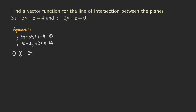So we're going to get 2x, and then −5 minus −2 gives us −3, so minus 3y. The z's get cancelled when you take z minus z. So we get 2x − 3y = 4. Now we have an equation with just two unknowns.